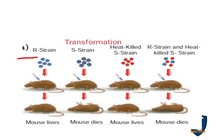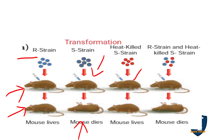In the second step, S type (smooth, virulent) cells are injected into a mouse — the mouse dies. In the third step, heat-killed S type cells are injected — the virulent cells are killed by heat — and the mouse lives. Now, when the R strain and the heat-killed S strain are mixed together and given to a mouse, the mouse dies.